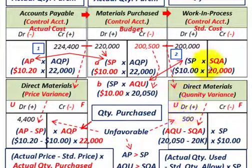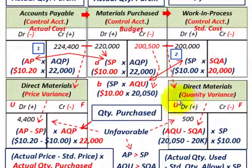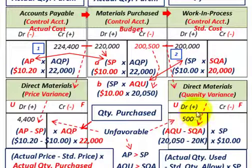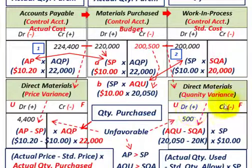Even if you didn't know all the quantities, you could see the $500 balance must go to direct materials quantity variance. Had we used fewer units — say 19,000 versus the 20,000 allowed — the quantity variance would have been favorable, shown as a credit. Any debit in direct materials quantity variance is unfavorable; any credit is favorable — the same logic applies to the direct materials pricing variance account.